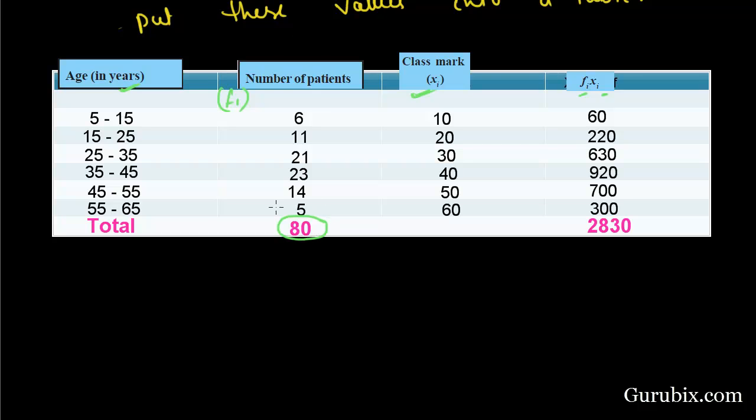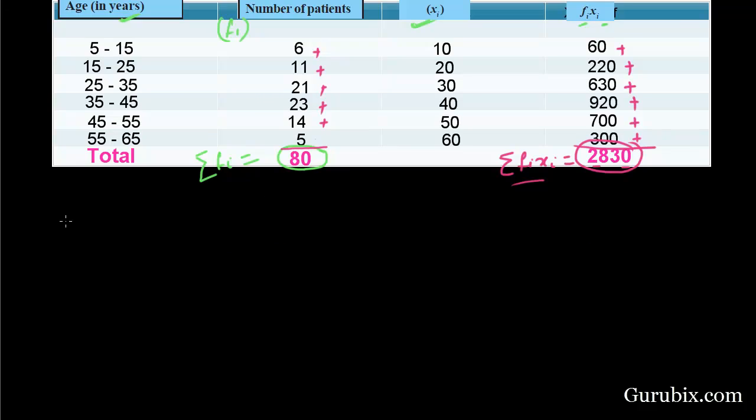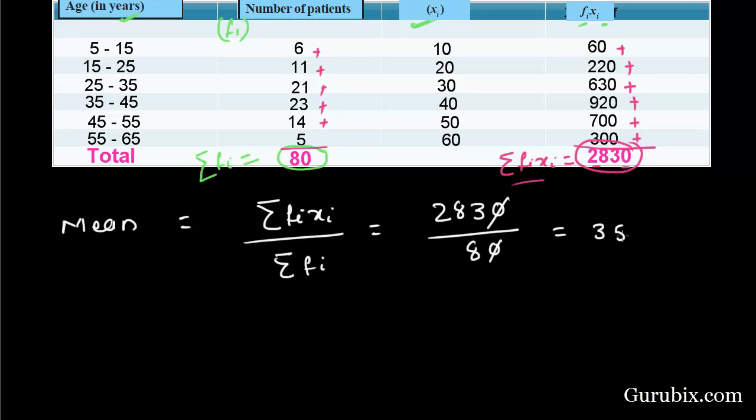This is the total sum of number of patients means summation of fi equals 80. Summation of fi means the sum of all terms of fi means 6 plus 11 plus 21 plus 23 plus 14 plus 5 equals 80. This is the summation of fi times xi means 60 plus 220 plus 630 plus 920 plus 700 plus 300 equals 2830. Now, we know that mean equals summation of fi times xi divided by summation of fi equals 2830 divided by 80 equals 35.37.